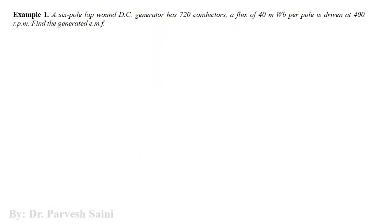In this example, the statement is that a six-pole lap-wound DC generator has 720 conductors, a flux of 40 milliweber per pole, and is driven at 400 rpm. We have to find out the generated EMF, that is the value of Eg.